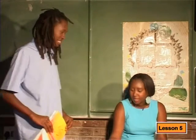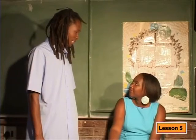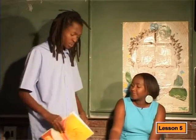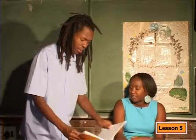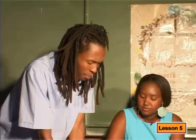Hi Miss. Hi Deboho. What are you working on today? I'm busy with graph interpretations. I was doing pretty well until I got to this question here. It says I need to find the points of intersection of the two graphs, but I have no idea how to do that. Well, to do that you would have to solve the equations simultaneously.